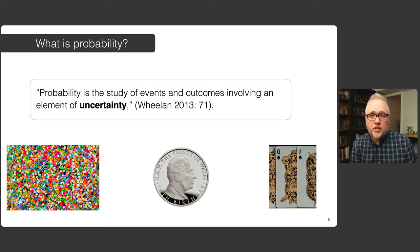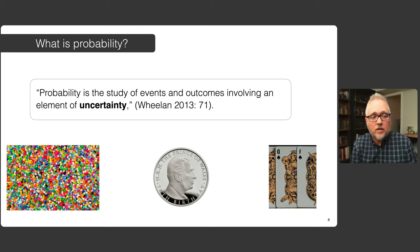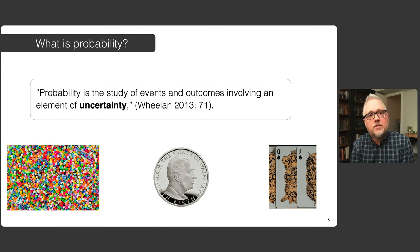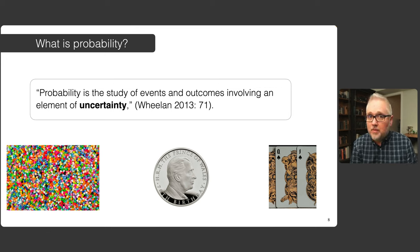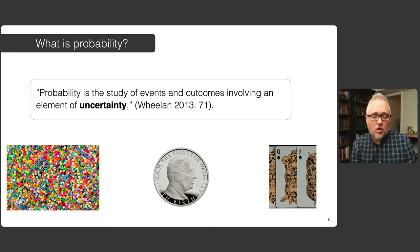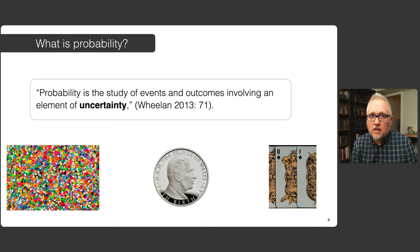The first major question is: what is probability? Probability — this quote from Whelan says — is the study of events and outcomes involving an element of uncertainty. And this is a crucial thing that differentiates the social sciences from potentially other fields of study. In social science, when we're studying human beings and their institutions, this is a probabilistic universe. There are a whole lot of us.